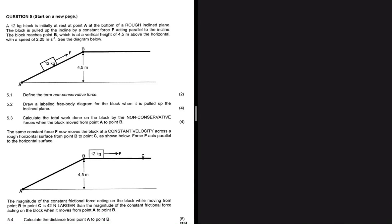Let me start by apologizing because the way I'm going to solve 5.4 is a bit gangster, but let's see what happens. So the question is saying that a 12 kg block is initially at rest at point A at the bottom of a rough inclined plane.